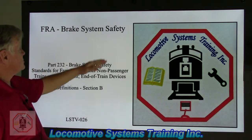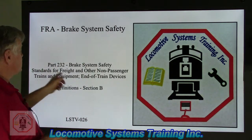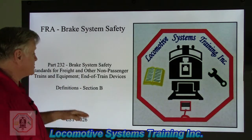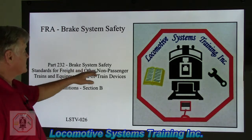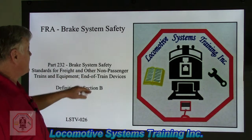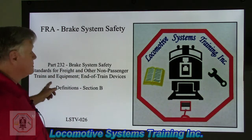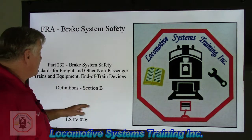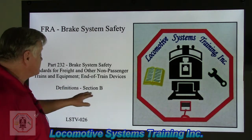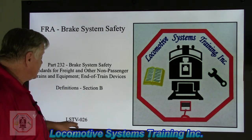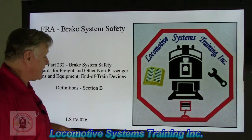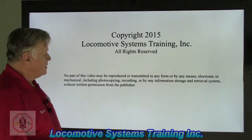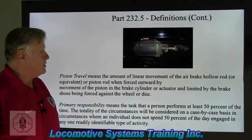So the FRA brake system safety Part 232. Remember I told you we're going to be moving on to air brakes — here we are. Brake system safety standards for the freight and non-passenger trains, which means freight trains, and equipment end of train devices. Definition section B. This is LSTV-026. And here we go — we're still in definitions.